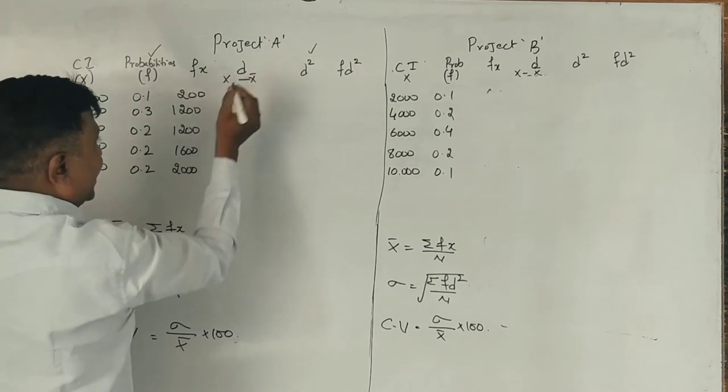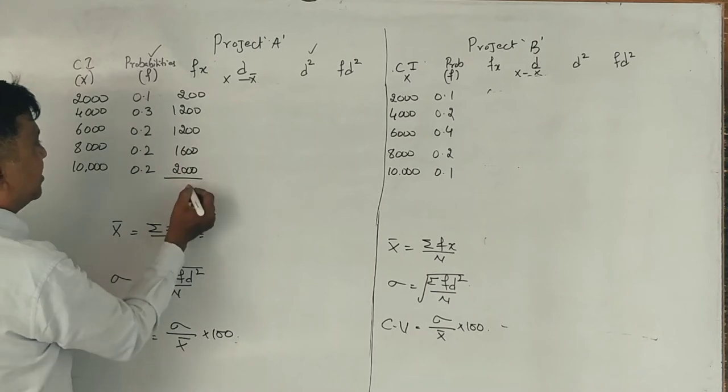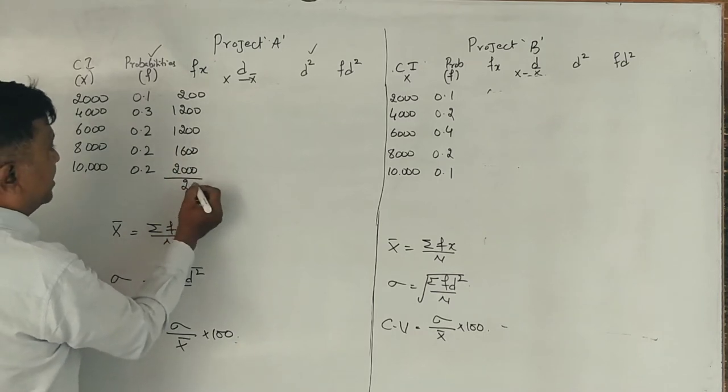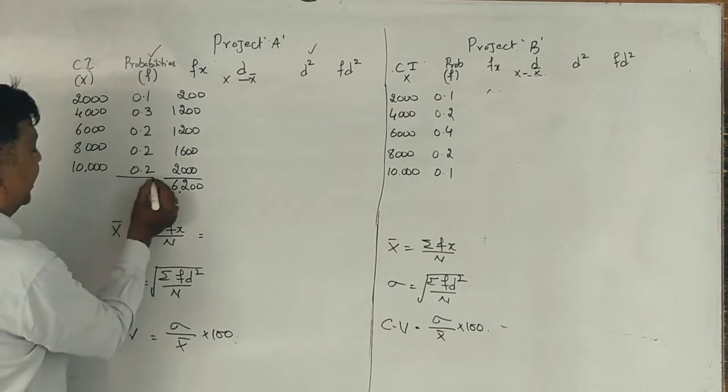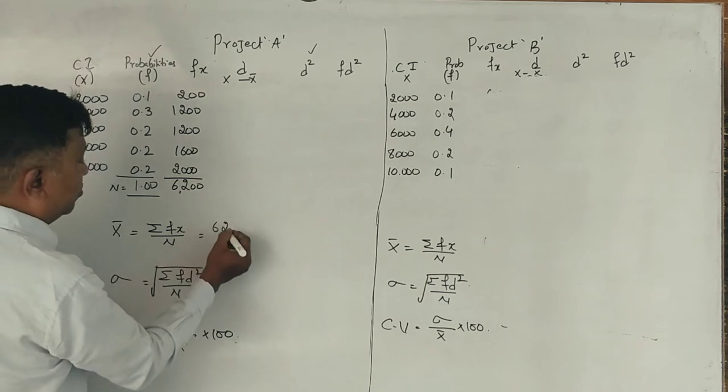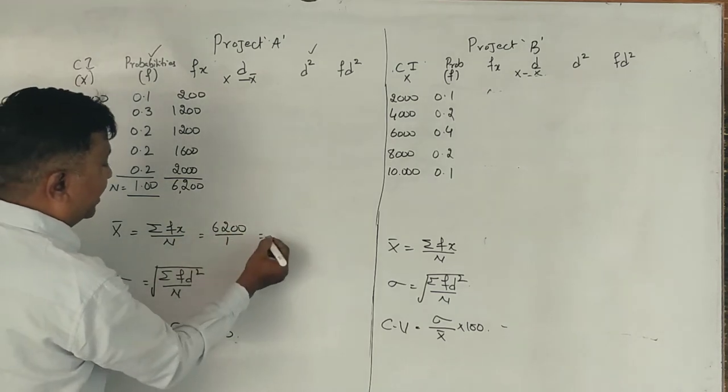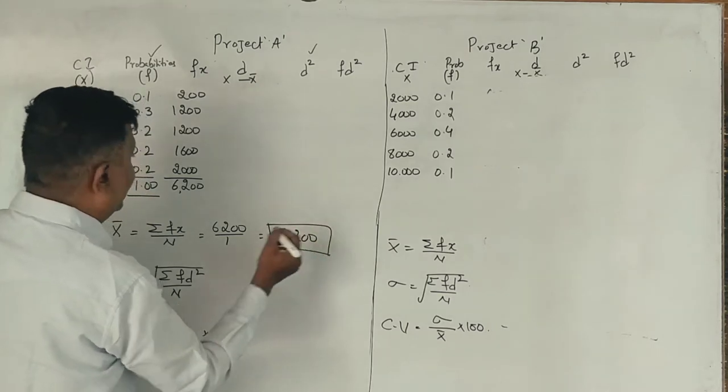Total Fx equals 6,200. Mean x equals 6,200 divided by 1, which is 6,200. Correct?